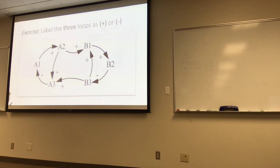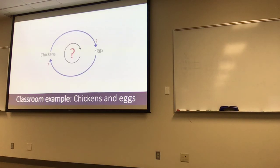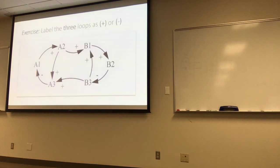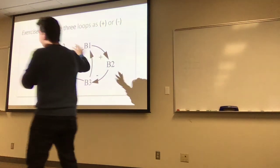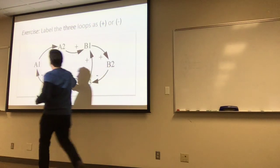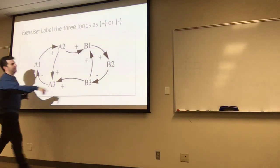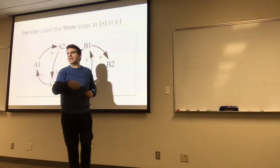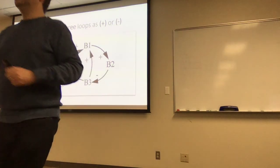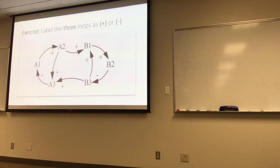A student asked what would make the chicken-egg loop balancing rather than reinforcing — the answer is a counteracting (negative) relationship somewhere in the loop. Another exercise: a more complex diagram with three loops. Students are asked to identify and label all three loops by talking to their neighbor for 30 seconds.